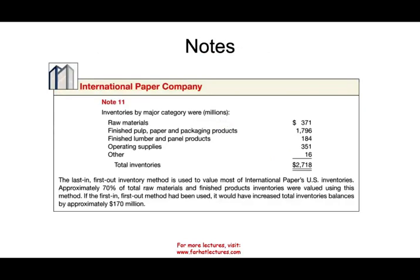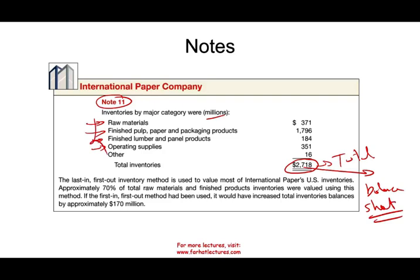Another method is notes. For example, inventory is shown as $2,718 million on the balance sheet, and you would say 'see note 11.' In note 11, they break down inventory to show how they arrived at the total. They also disclose the method: LIFO inventory method is used for most U.S. inventories, with approximately 70% of raw materials and finished goods valued using this method. Importantly, they note that if FIFO had been used, it would have increased total inventory balances by approximately $170 million — giving FIFO-comparison users the information they need.